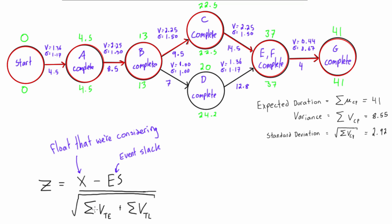Down here on the bottom, this term — the sum of V subscript TE — is just the variance of the path that created the early time. So you sum up all the variances along the path to the early time; for node D complete that would be 1.36 plus 2.25 plus 1. This other term is just the variance of the path that created the late time, so you start at the end and sum up variances along that path — for node D complete that would be 0.44 plus 1.36.